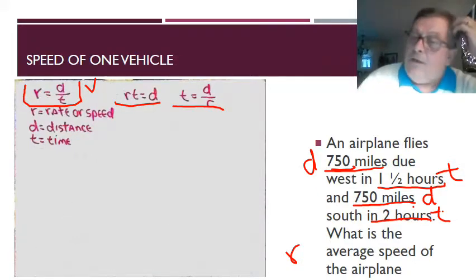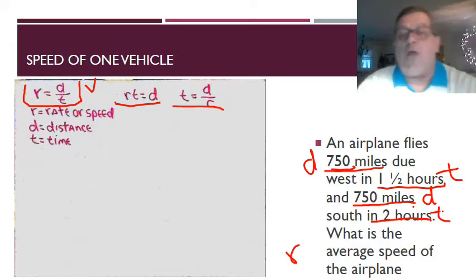Now since we are traveling in two different directions, it's not quite as simple as what our formula shows here. What we're going to need to do is add our two distances together over the two quantities of time we have been given and then divide by that amount. So let me show you what we're talking about.